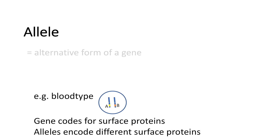We can take blood type as an example. Genes code for surface proteins, so we have the blood type. Let's say we have a gene that encodes for a surface protein, and we have alleles which encode for different surface proteins. In this gene region there are certain variants, or certain forms of a given gene, and these encode for different surface proteins.